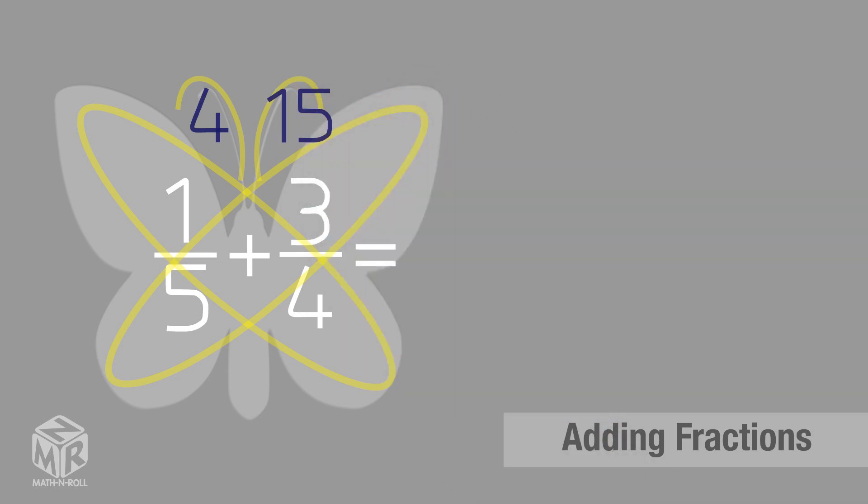Next, we give our butterfly a body. We draw the body like so and multiply the denominators. 5 times 4 equals 20. We put the product inside of the body.